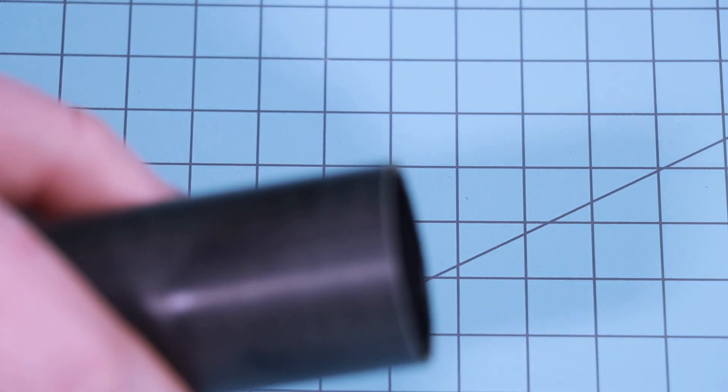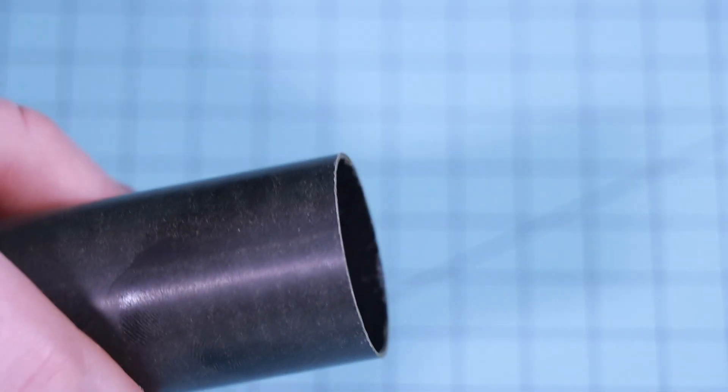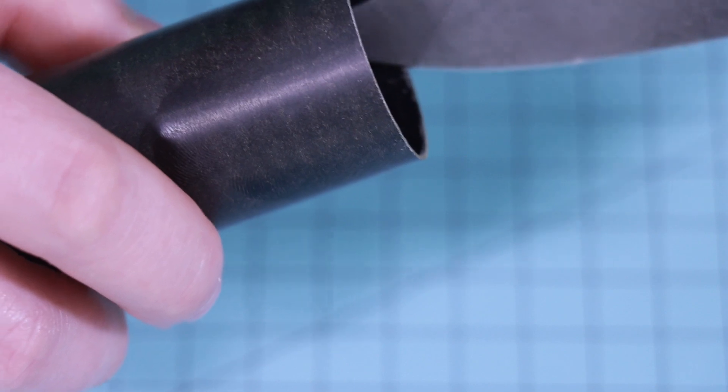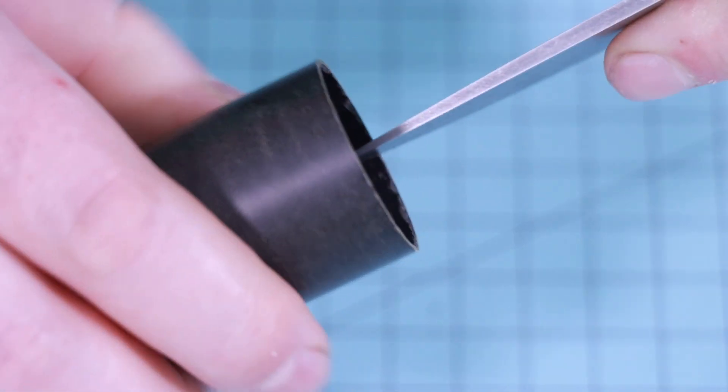Next I'm going to chamfer the inner edge of the motor liner on both sides. They recommend using a hobby knife, I'm using my pocket knife, just running backwards against the blade, just gently scraping off some material, just trying to break the hard corner.